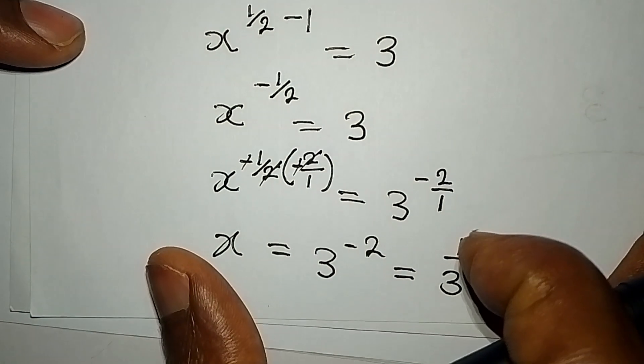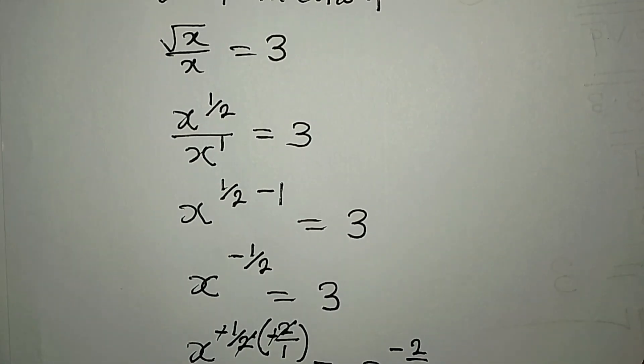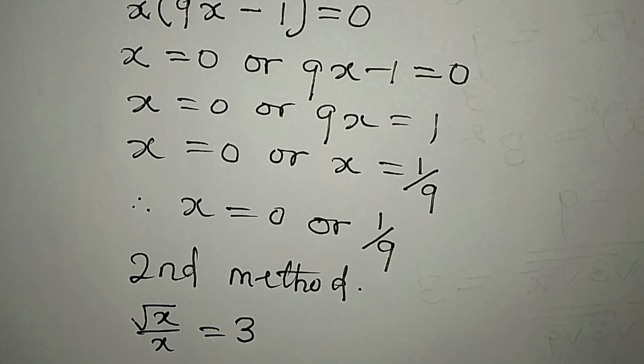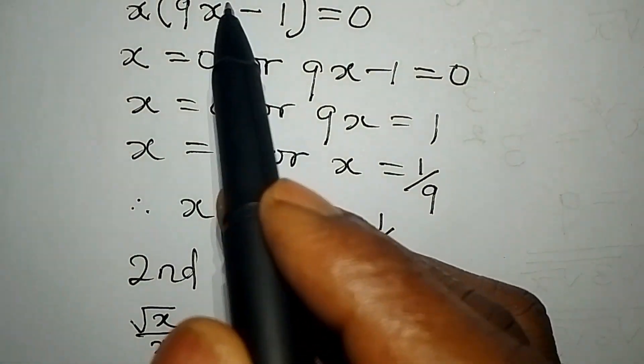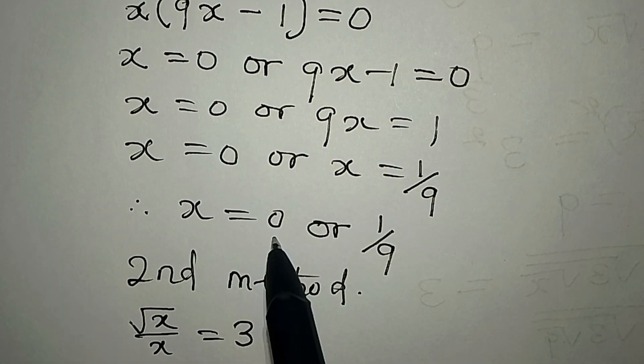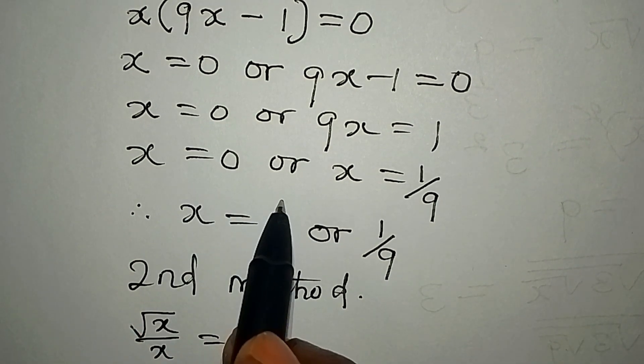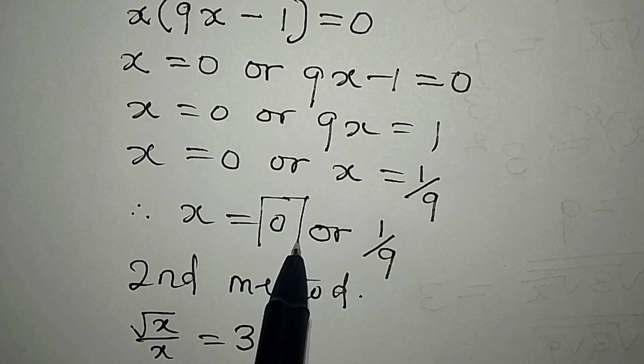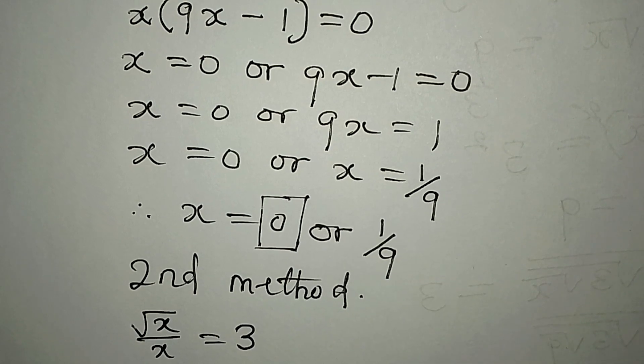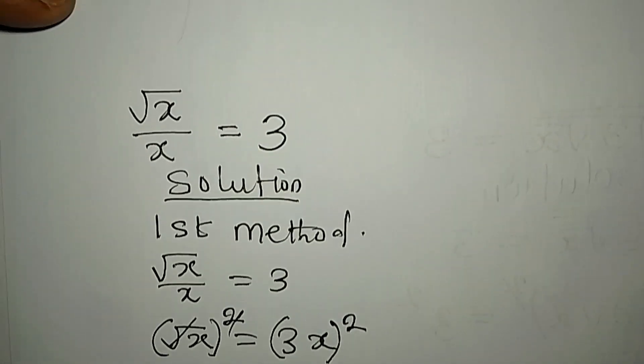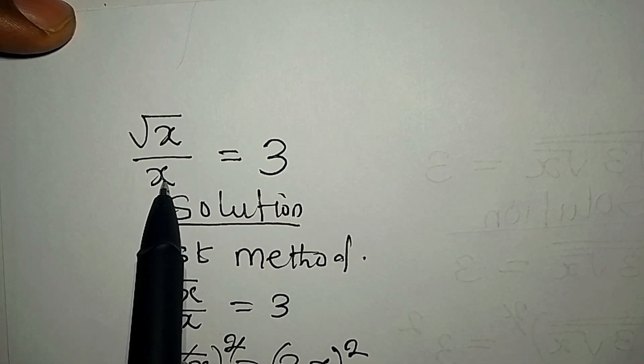Although from the first method, let's observe something very quickly. Where we got x to be equal to zero or one over nine, remember that this x to be equal to zero does not satisfy the equation.